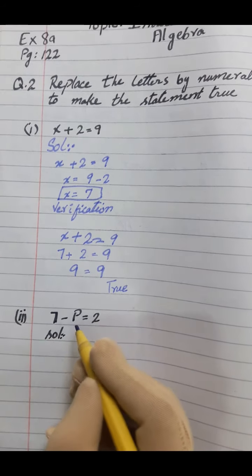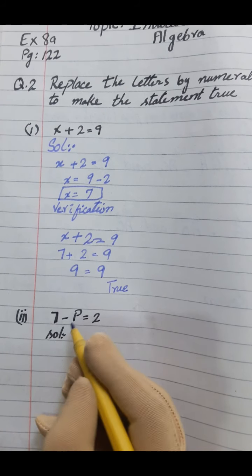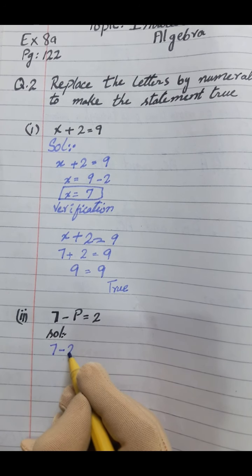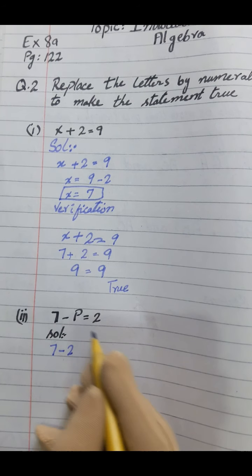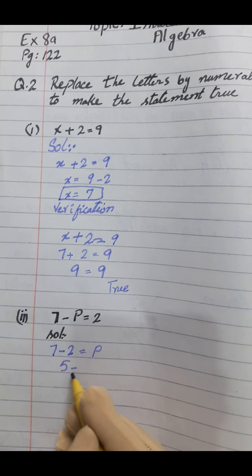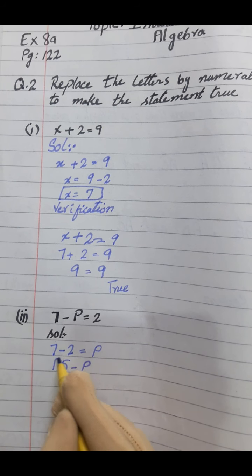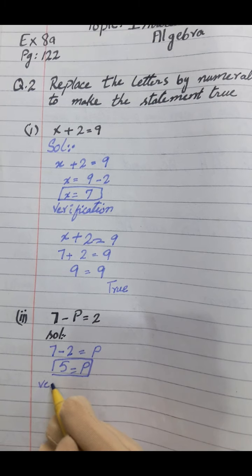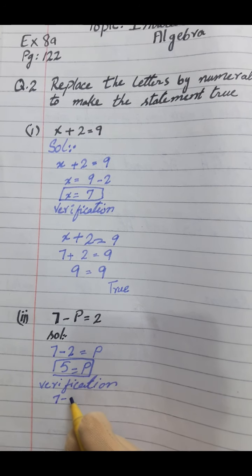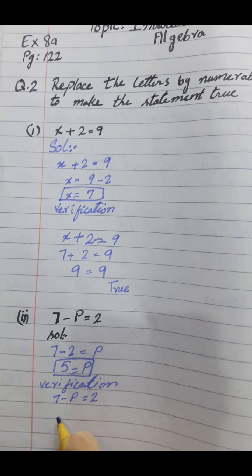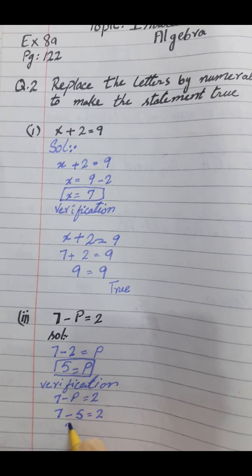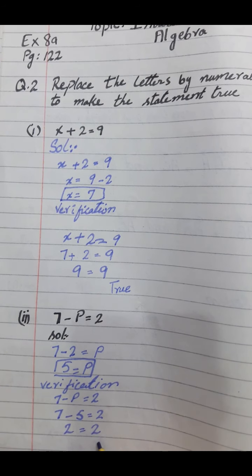Part 2: 7 minus P equals 2. P ko left side move kiya aur 2 ko right side rakha: P = 7 minus 2, so P = 5. Verification: 7 minus 5 equals 2 — left hand side equals right hand side, statement is true.